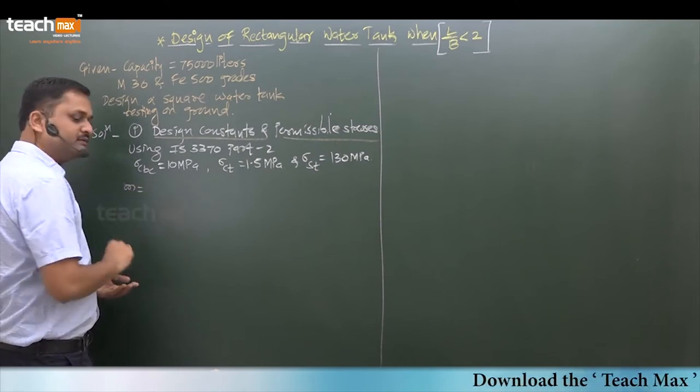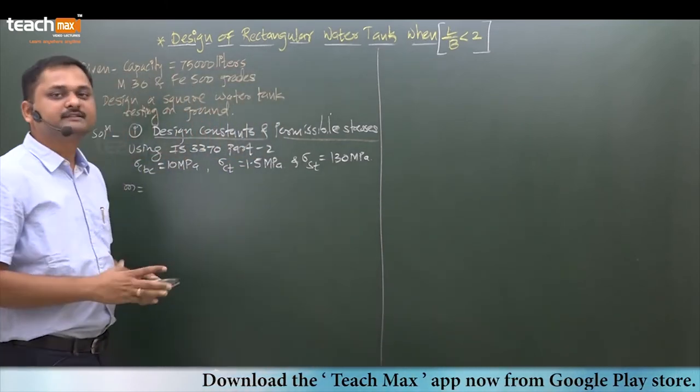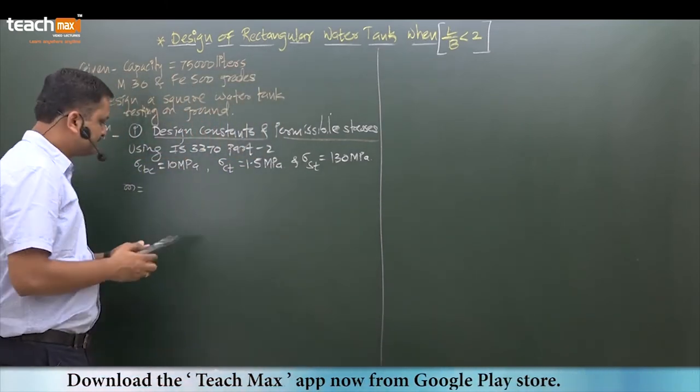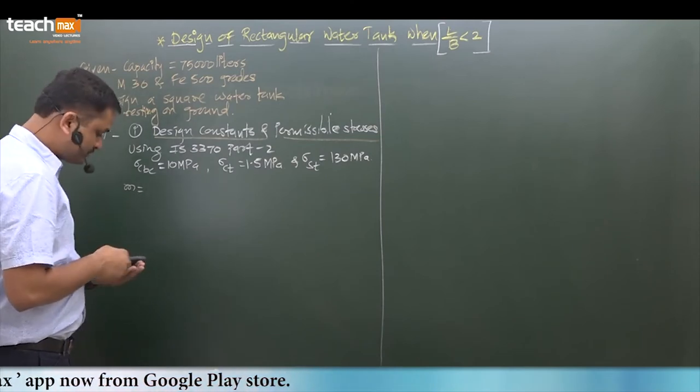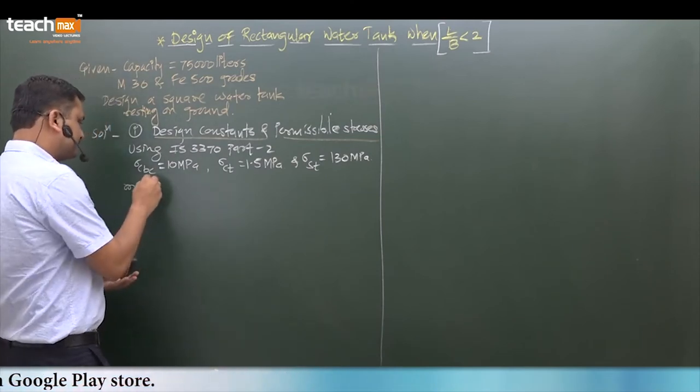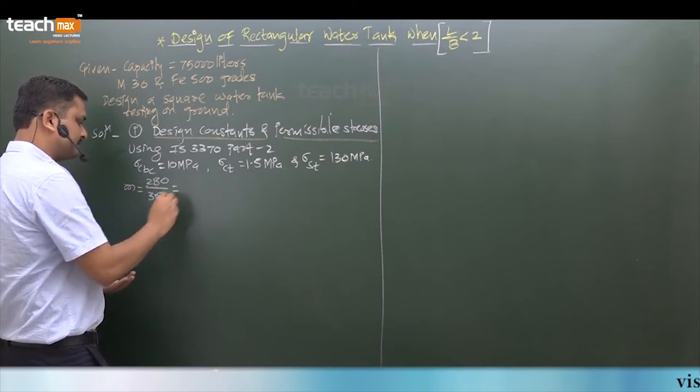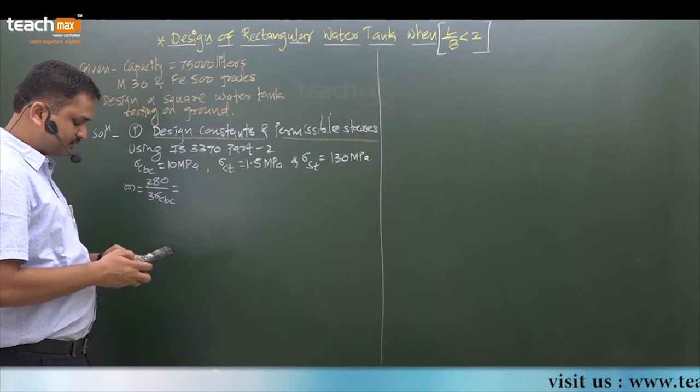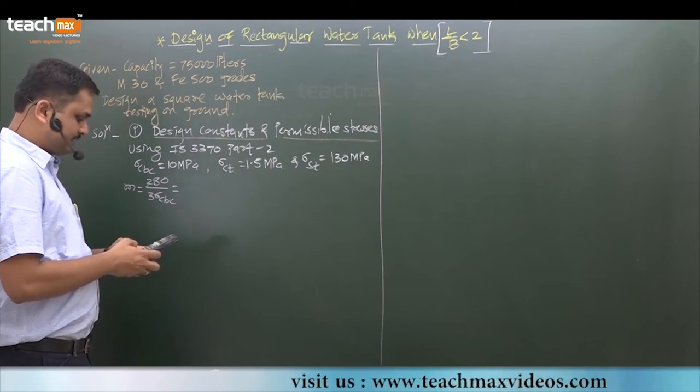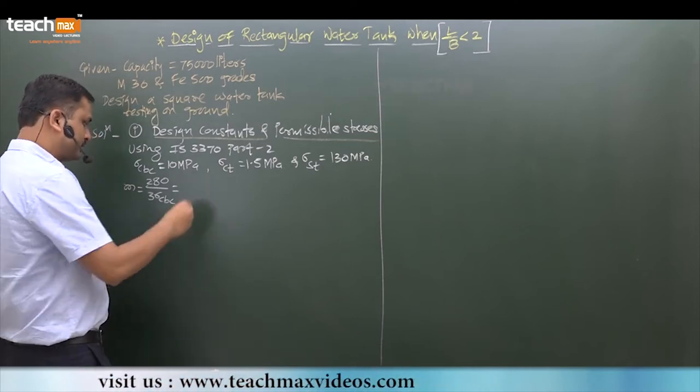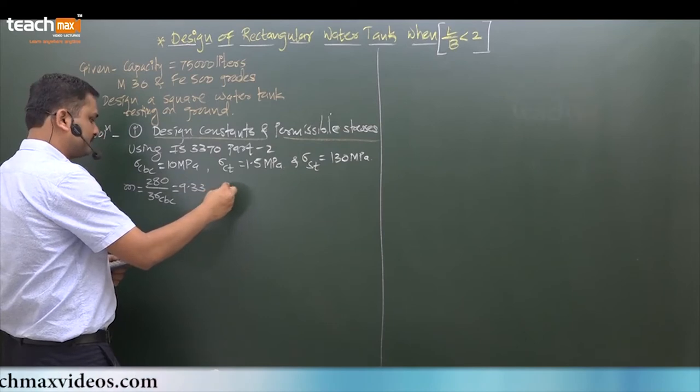Here, modular ratio: we know it is M = Sigma CBC upon (M Sigma CBC plus Sigma ST). I am directly putting the value - modular ratio we have to calculate. It is 280 upon 3 Sigma CBC; this is the formula that we use. First, put the value: 280 divided by 3 into 10. It is 9.33. Now find out the remaining.